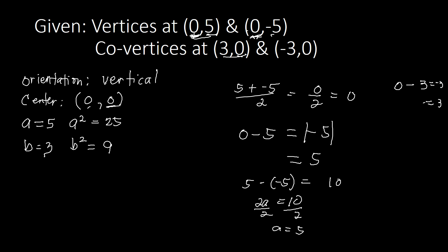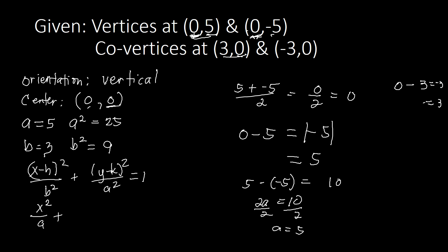We are now ready to write our standard equation. Since the orientation is vertical, the form is: (x − h)²/B² + (y − k)²/A² = 1. Plugging in: H is 0, so we get x squared over B squared which is 9, plus y squared over A squared which is 25, equals 1. This is now our standard equation of our ellipse.